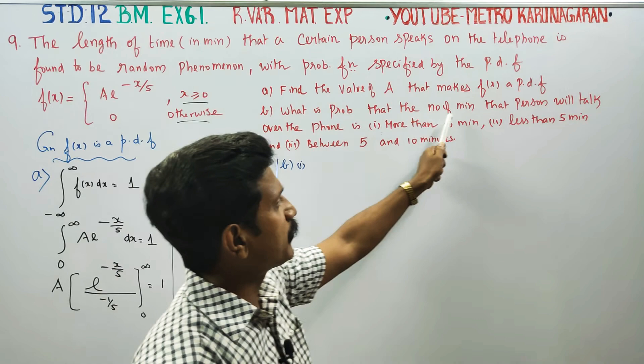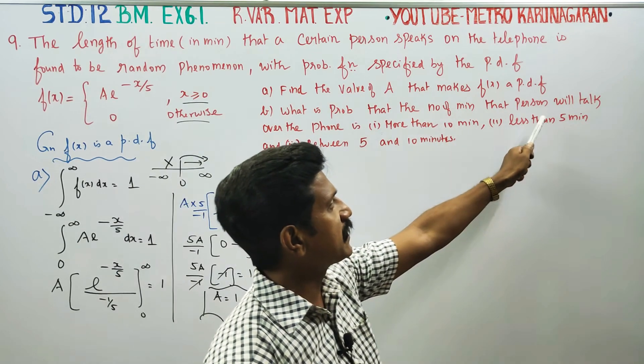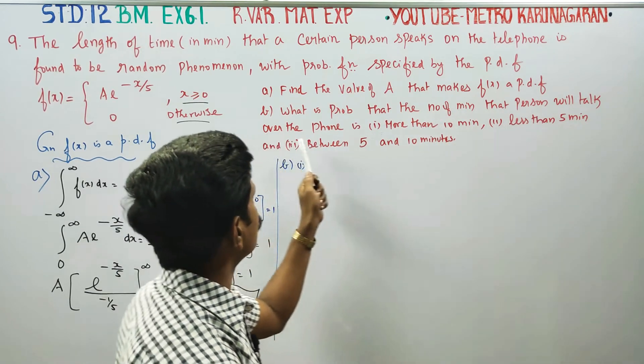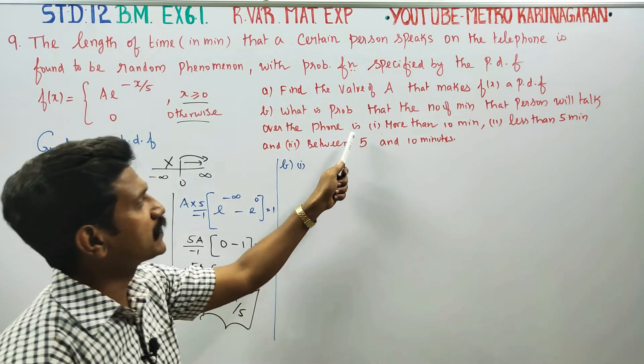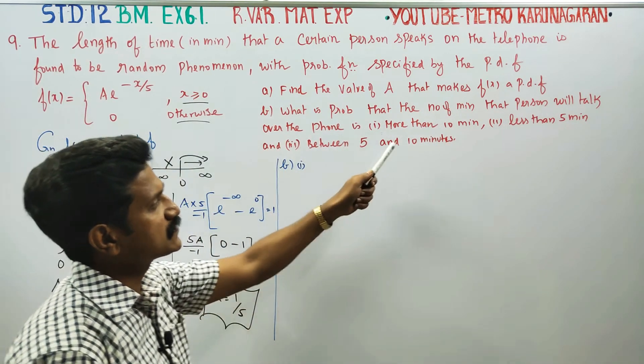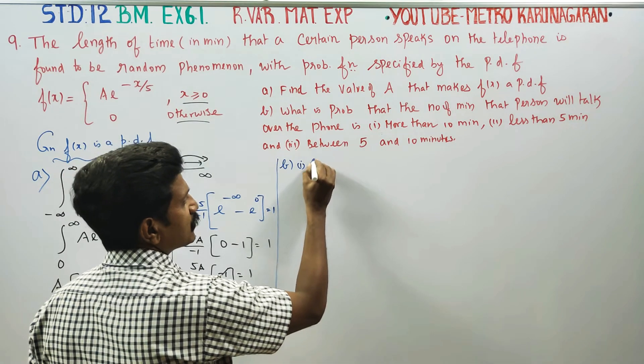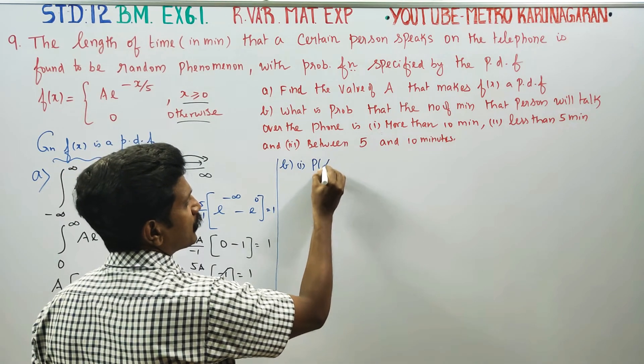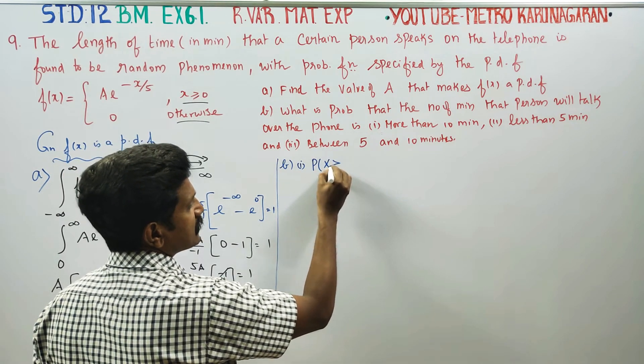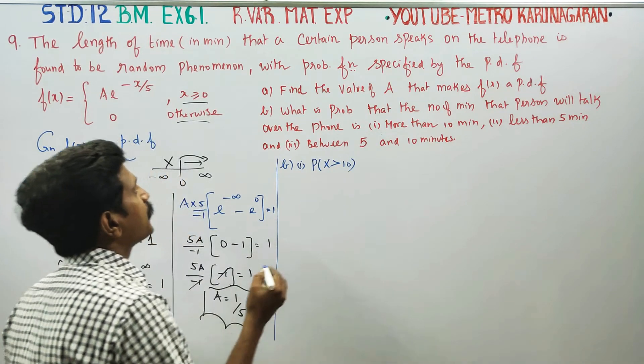Now for the second part: what is the probability that the number of minutes a person will talk over the phone is more than 10 minutes? We need to find the probability that X is greater than 10.